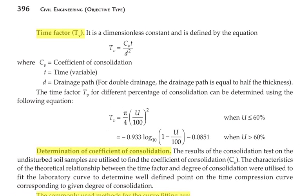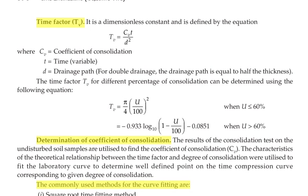Next we are going to see the time factor TV. It is a dimensionless constant given by TV = CV × T / D², where CV is the coefficient of consolidation, T is time, and D is the drainage path. For double drainage, the drainage path equals half the thickness. For U ≤ 60%: TV = (π/4) × (U/100)². For U > 60%: TV = −0.933 × log₁₀(1 − U/100) − 0.0851.